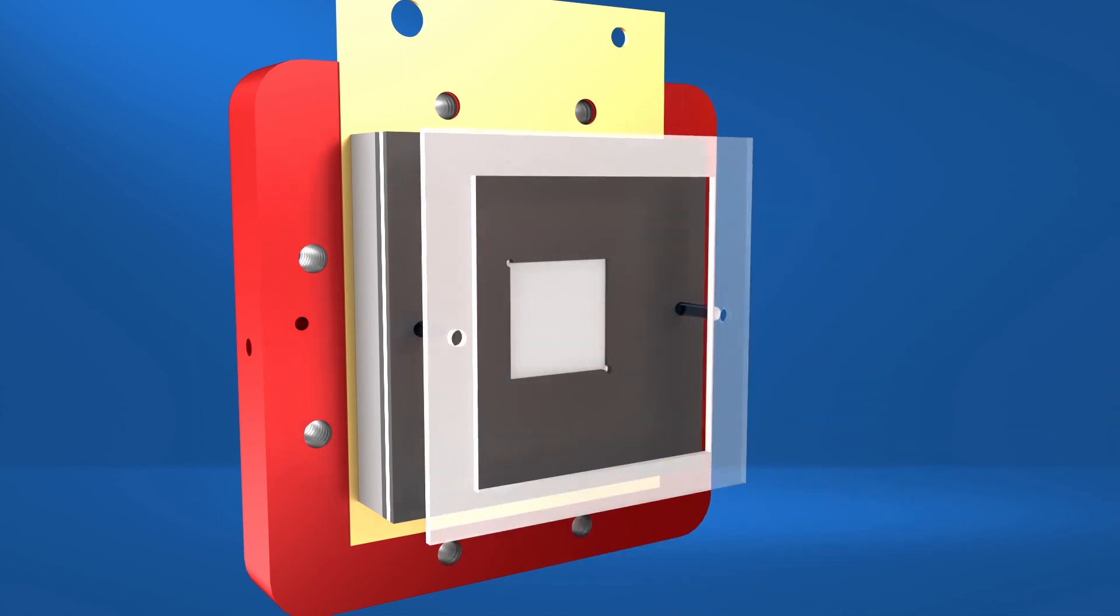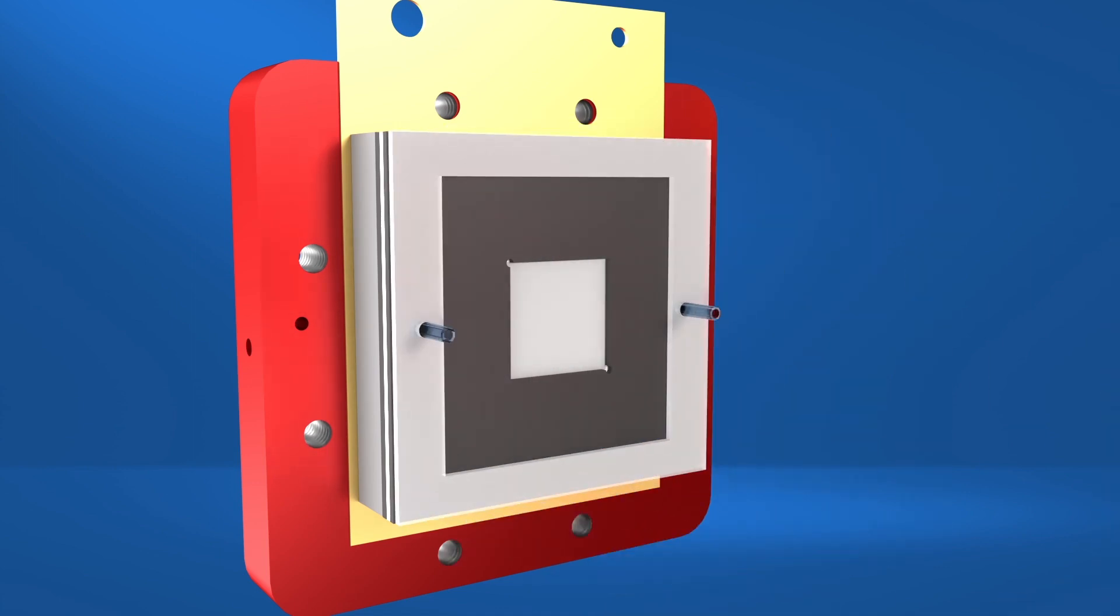Place the membrane or separator with the pre-cut alignment holes on top of the negative side main gasket.